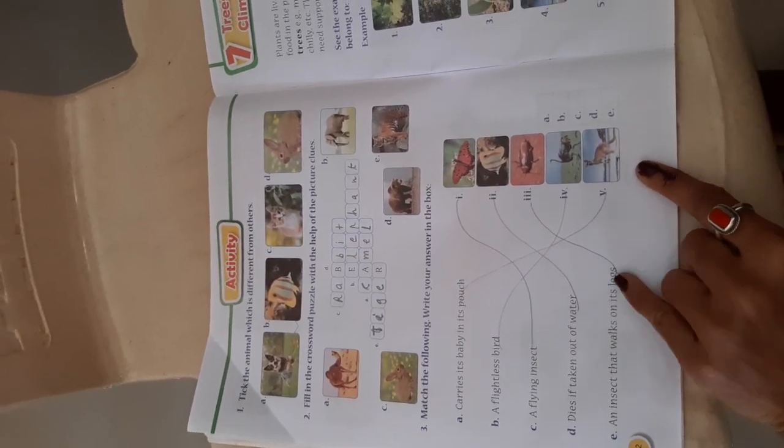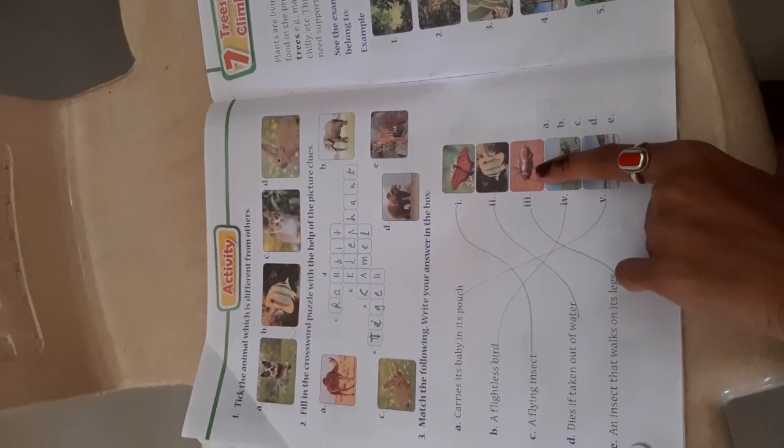Then, an insect that walks on its legs - it is cockroach. You have to tick the picture and match this in the following activity.